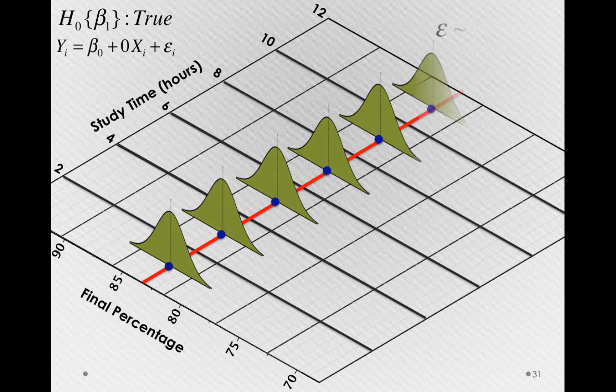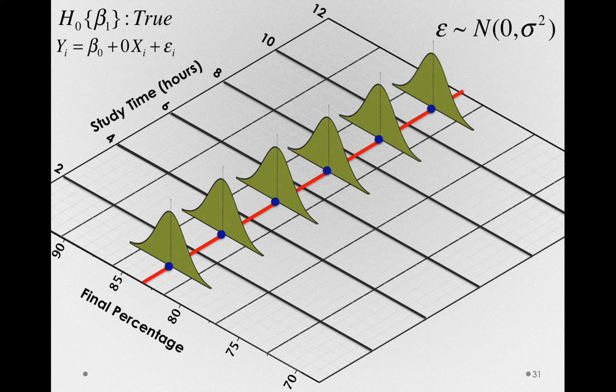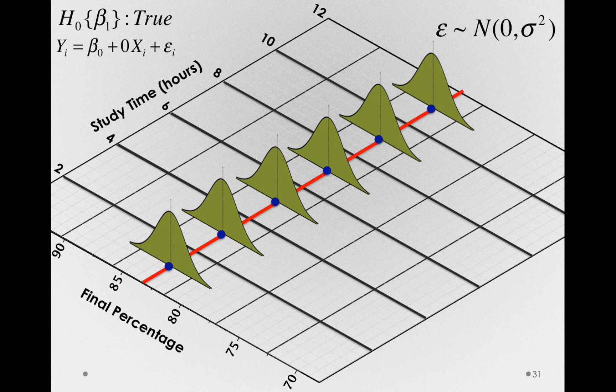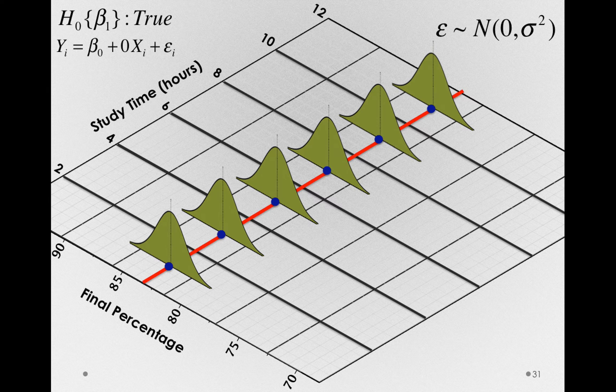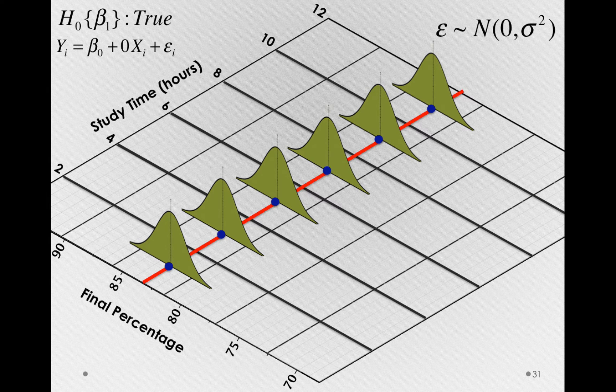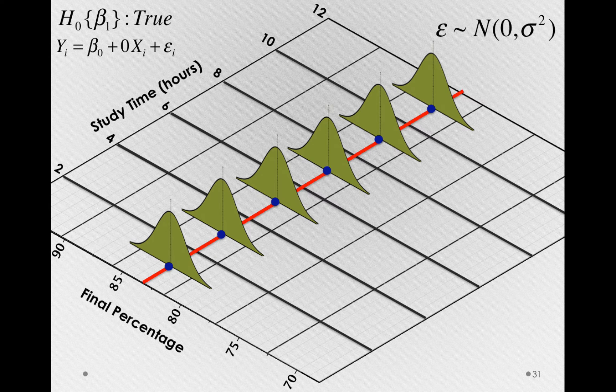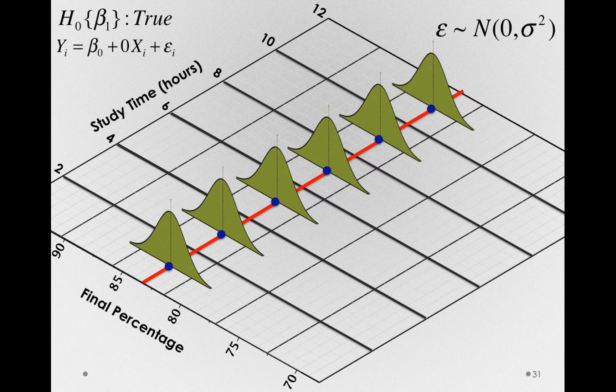What this would look like is a flat line or a non-sloped line in the population, still with error around it. Error is always there. Individuals at any given amount of study time will certainly differ from each other. All we're asserting with the null hypothesis being true for beta1 is that the conditional means of these distributions don't change as a function of x.